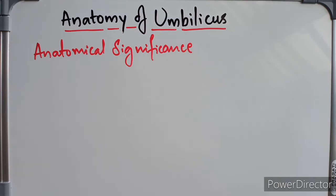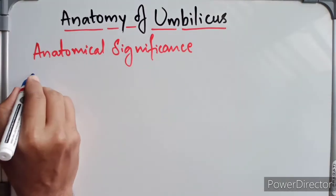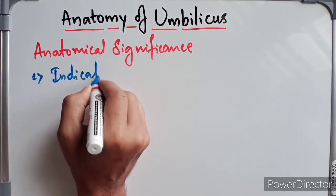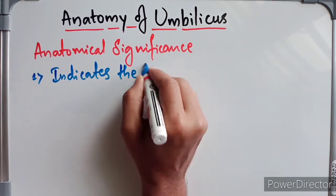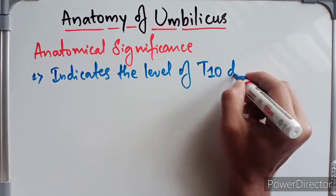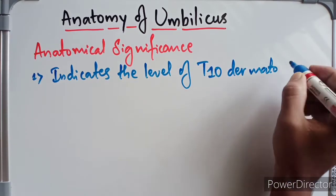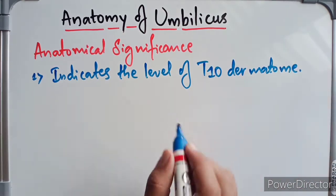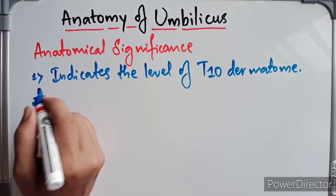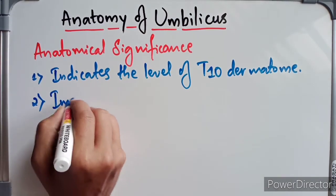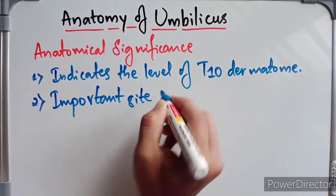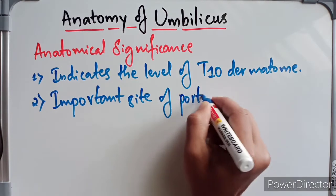The umbilicus lies at the level of T10, so it indicates the level of the T10 dermatome — it is supplied by the 10th spinal segment. It is also one of the most important sites of portocaval anastomosis.